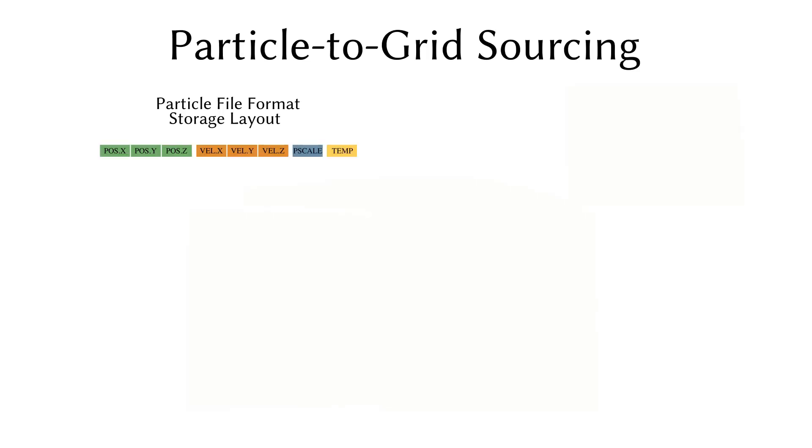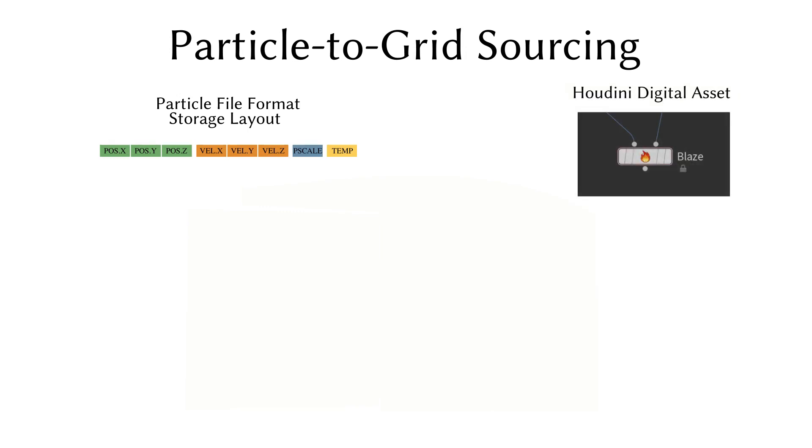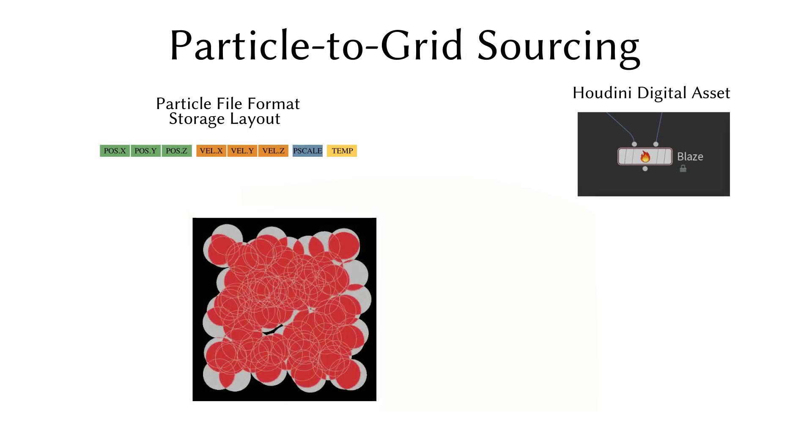The source particles are sequentially stored on disk in a custom binary file format where each particle takes 32 bytes: three floats for both the position and velocity and one float for the p-scale and temperature. Those files can be generated using the provided Houdini digital asset running within the free version of Houdini. Each thread will scatter a single particle to the grid. The write hazards are resolved using atomic functions. This ensures that no thread will overwrite a value that was just set by another thread running concurrently.